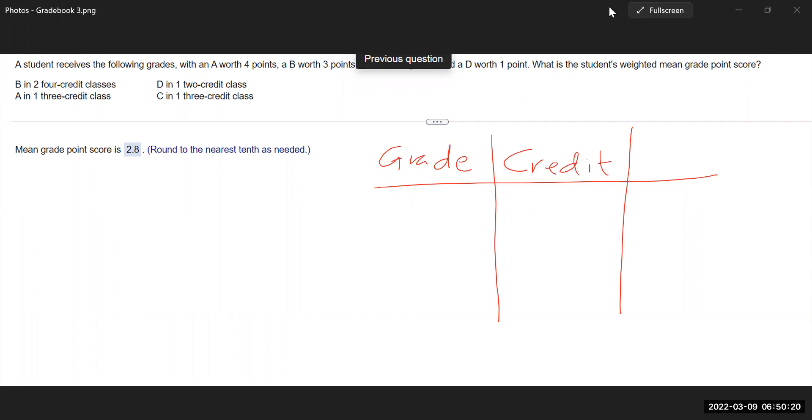Okay, now B in two four credit classes. So that means that we have two B's right there. So B in two four credit classes and each of these B's have four credits. Sounds good.